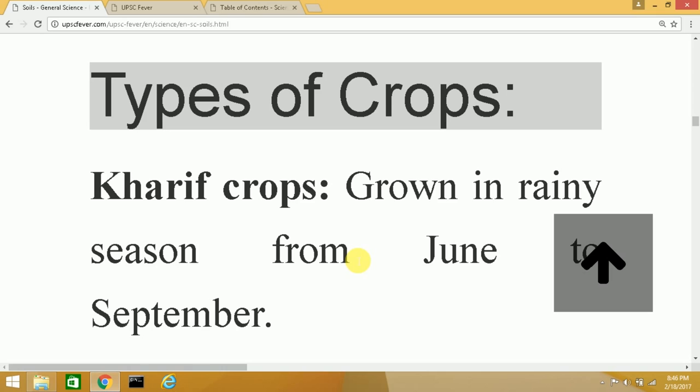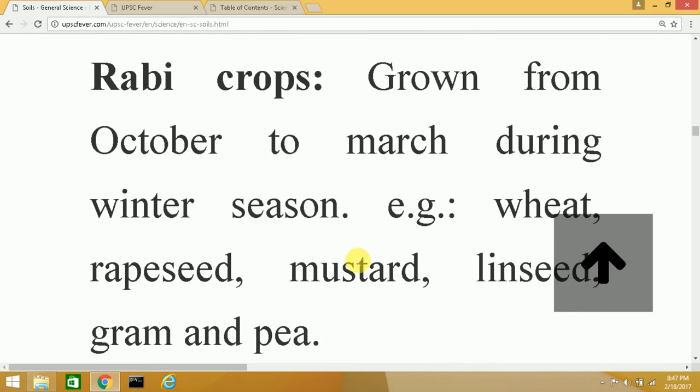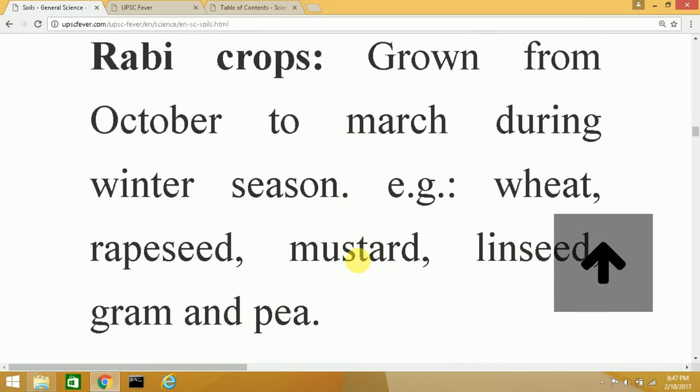Then there is the Rabi season, which is from October to March. There's not much rain during this period; this is the winter season. Certain crops like wheat, rapeseed, mustard, linseed, gram, and pea are grown in this period.